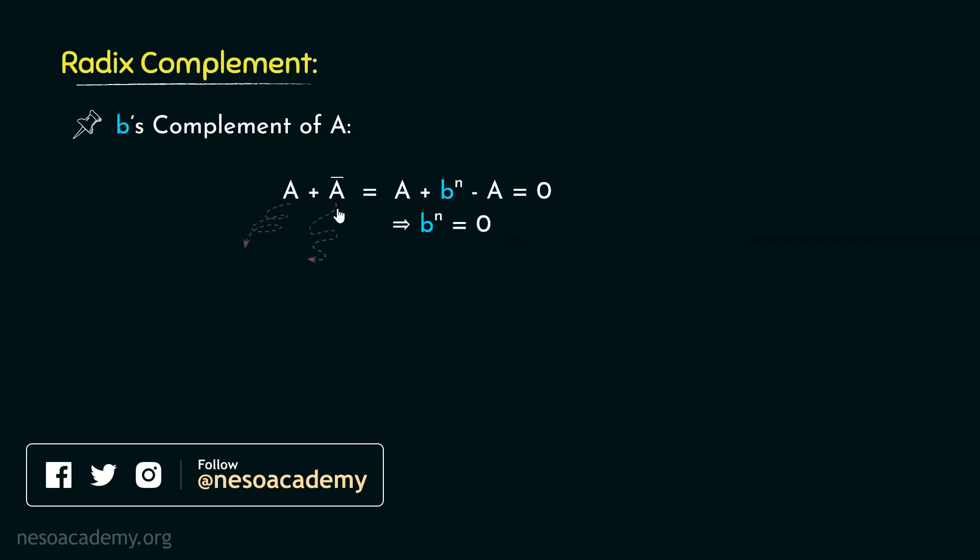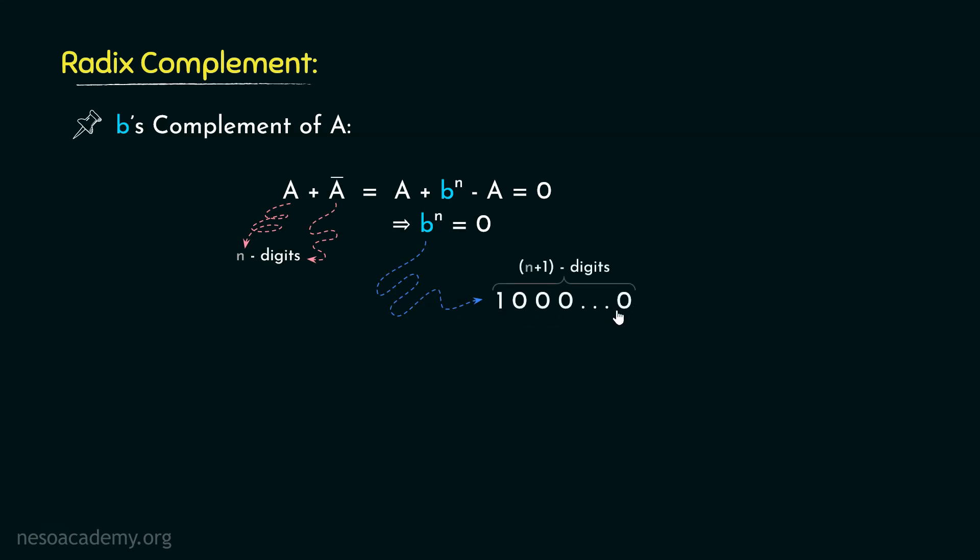Say, A and A-bar both are of N digits. Although it is addition, but we are actually performing subtraction in here, aren't we? Now think about it. Subtraction between two N-digit numbers can at most result in an N-digit number. It can never be more than that, correct? Now, this B raised to the power N means 1 and then N number of zeros, that is, a number of N plus 1 digits.